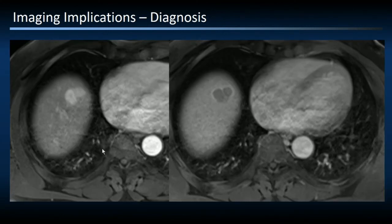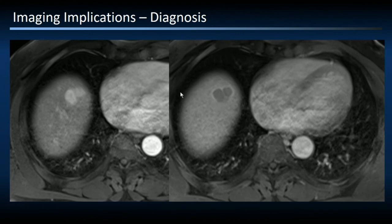Here is a simple example from our practice — an obvious LIRADS 5 lesion: a bilobed 2.5-centimeter mass in the right hepatic dome. It's hypervascular on arterial phase imaging, shows obvious intralesional washout, and delayed capsule-like enhancement. This is a no-brainer.